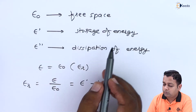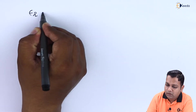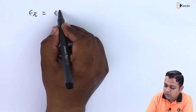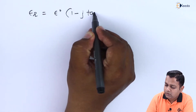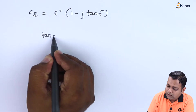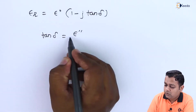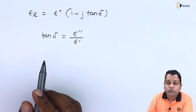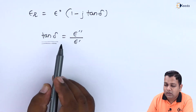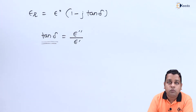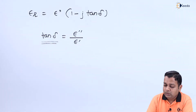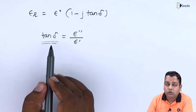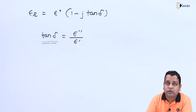The relative dielectric constant epsilon_R can be represented as epsilon dash × (1 − j × tan δ), where tan δ is called the loss tangent, defined as the ratio of epsilon double-dash to epsilon dash. It is the ratio of energy dissipated from the material medium to the energy stored in it, giving information about how lossy the dielectric medium is. Determining the loss tangent is essential for the complete determination of the dielectric constant.